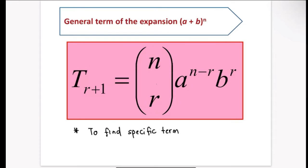Hello everyone. In this video we will learn how to find a specific term of a binomial expansion. As in our previous lesson, you already learned how to expand two types of equations. First, we use the formula (a + b)^n, which we use whenever n is a positive integer. The other formula, (1 + ax)^n, is used whenever n is a fraction or negative integer.